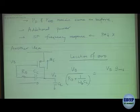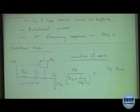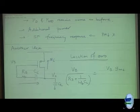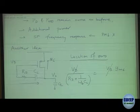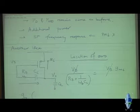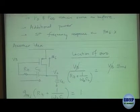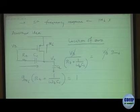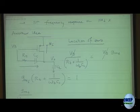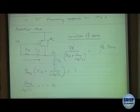So we write: GM6 multiplied by (Rz + 1/(omega_Z * CC)) equals 1. Then: GM6/(omega_Z * CC) equals 1 minus GM6*Rz.